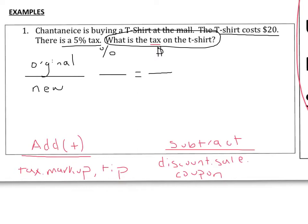Let's fill out the original first. Our shirt costs $20, so our original cost is $20. With no discount or addition applied, it is 100%. The new percentage will incorporate the 5% tax. Since tax means we need to add, our shirt becomes a little more than 100%. We take our original 100% plus our 5% tax, which gives us a new percentage of 105%.